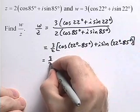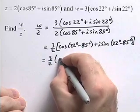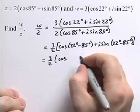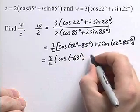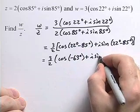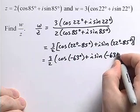This will be 3 halves times the cosine. 22 minus 85 will give us negative 63 degrees, and plus i sine of negative 63 degrees.